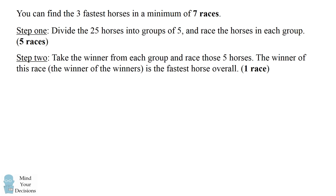Next, take the winner from each group and race those five horses. The winner of this race — the winner of the winners — is the fastest horse overall. Now in order to get the second and third fastest horses, we're going to have to do one more race. But to describe that race, I'm going to have to present some notation.